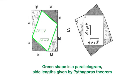If we look at the shape in the middle, bordered by four right-angle triangles, we can see that the side lengths are given by the hypotenuses of the right-angle triangles, which we obtain through Pythagoras theorem.